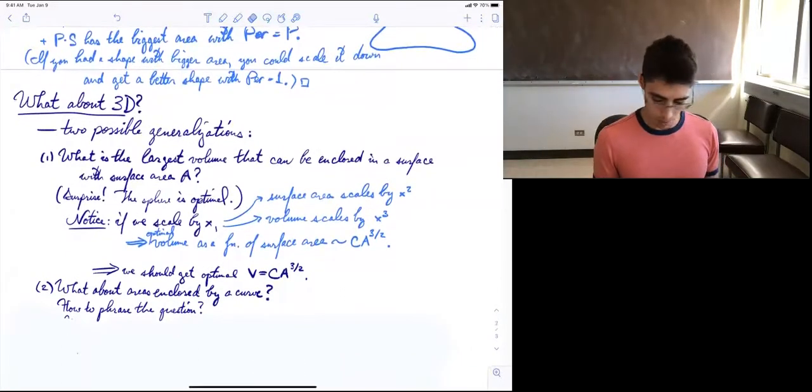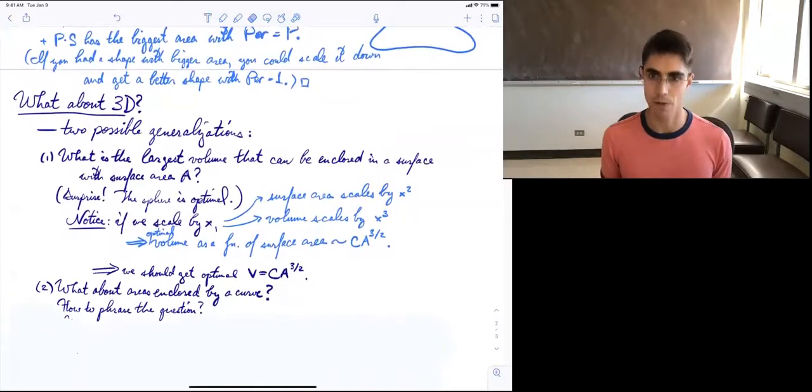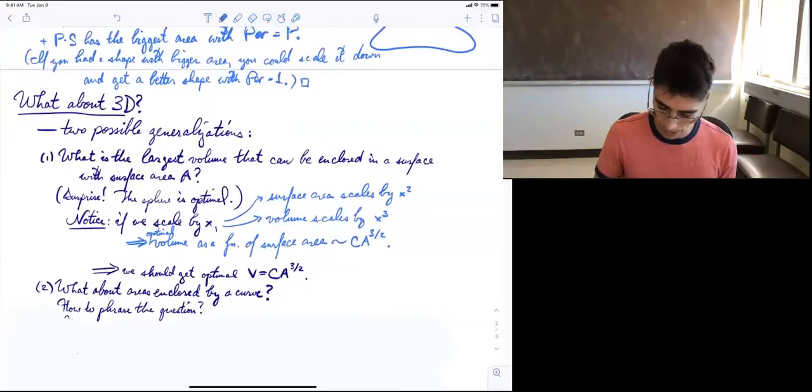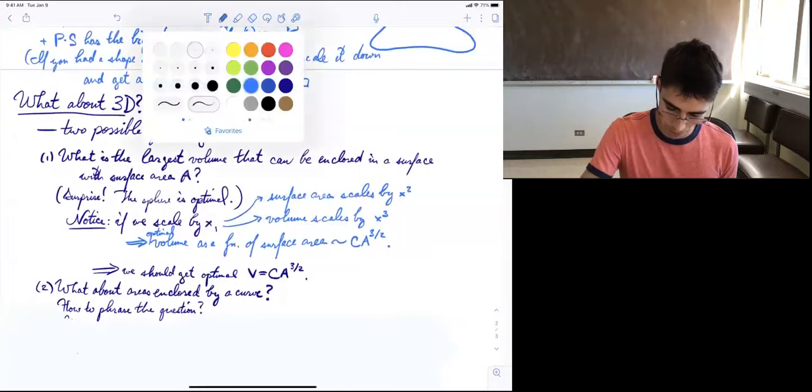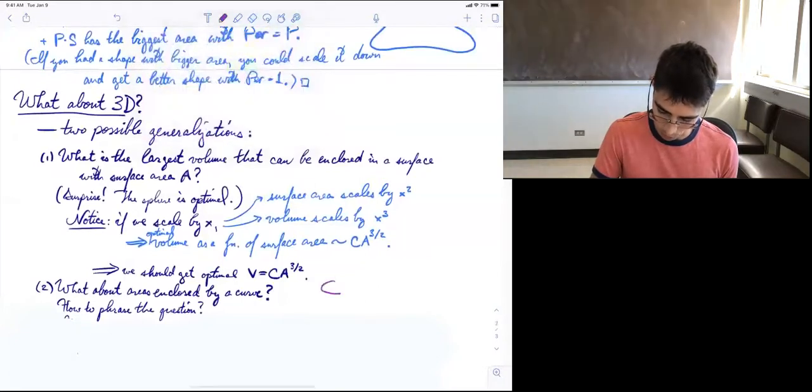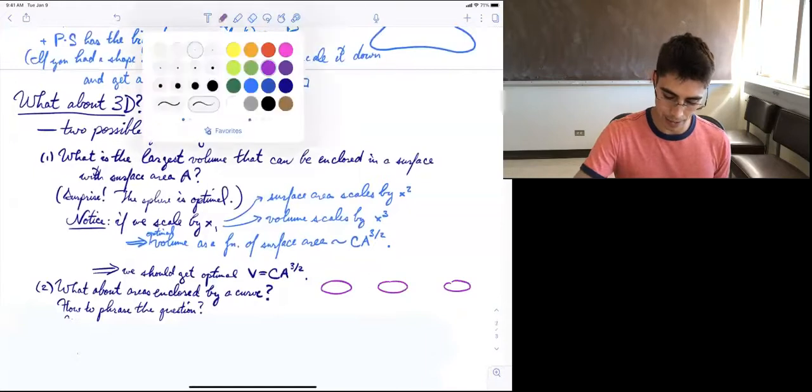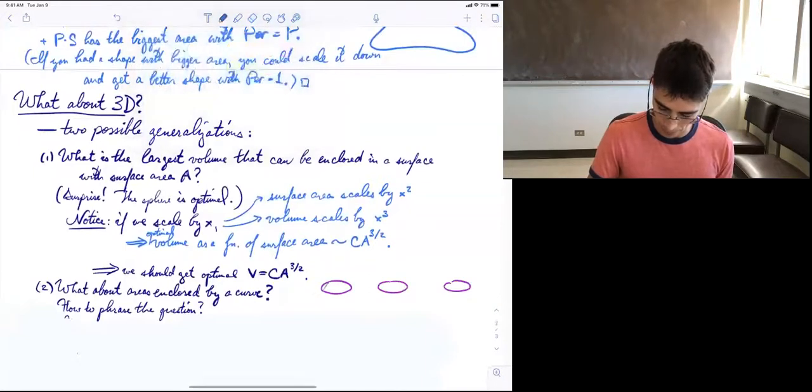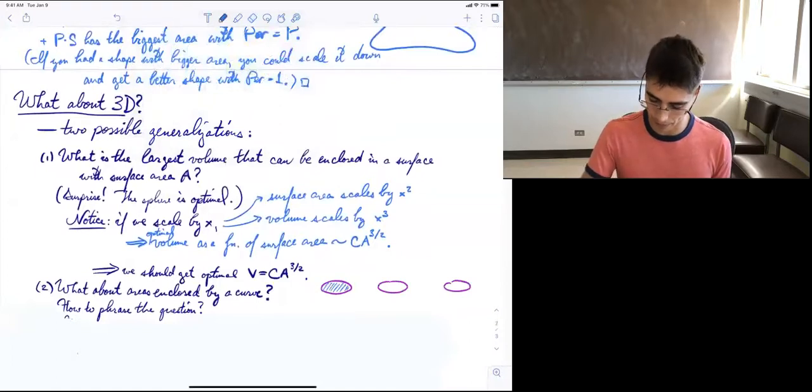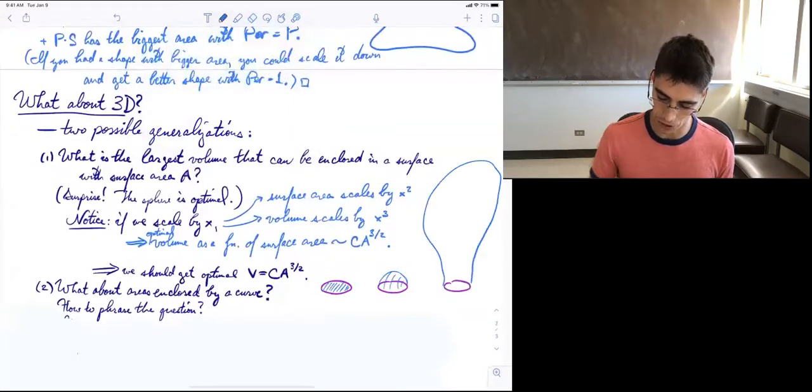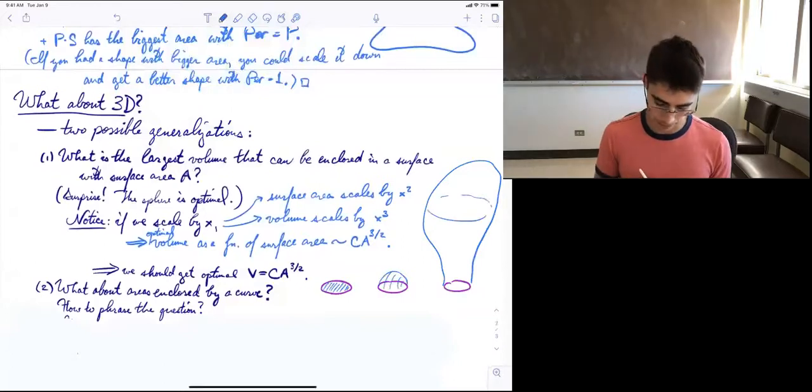Here's another generalization. What about the area enclosed by a curve? Now we have to be a little careful about what the question is, because in 3D, if you take a curve, here's my purple curve, it's just a flat circle in a plane. And I can fill it in lots of different ways. I can just fill it in with a flat disk. I can fill it in with a hemisphere. I can fill it in with a giant blob with a neck. These are all legal surfaces.